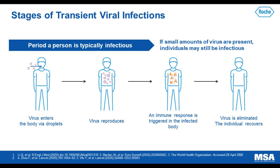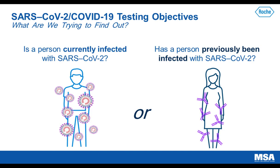To understand how we can utilize these tests, we need to understand the stages of transient viral infections. Typically, a person gets infected via respiratory droplets. The virus enters the host cell and hijacks it to manufacture more of itself. The immune system starts to respond to this replication. The first immunoglobulins present are IgM — the pentamers — and then as the disease progresses, high-affinity neutralizing immunoglobulins develop. Ultimately, the ideal situation is that the virus is eliminated and the individual recovers.